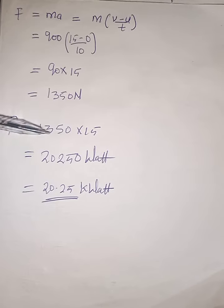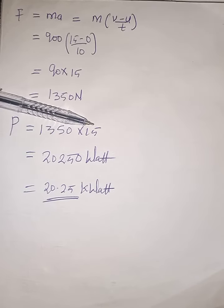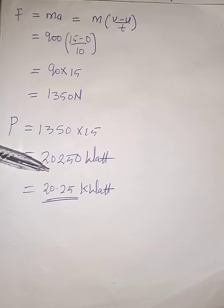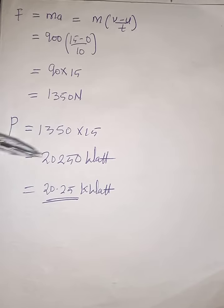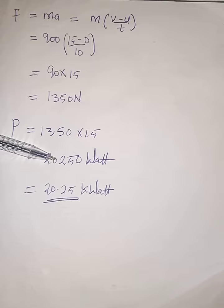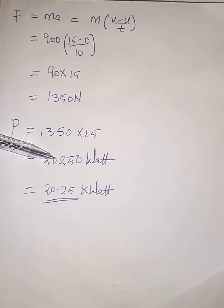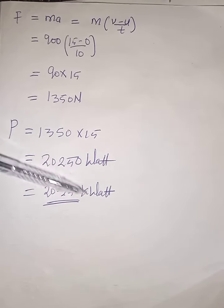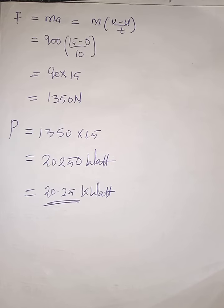So power equals force times velocity: 1350 × 15 = 20,250 watts. If you divide by 1000, you get 20.25 kilowatts. That is your answer. Thank you, God bless you.